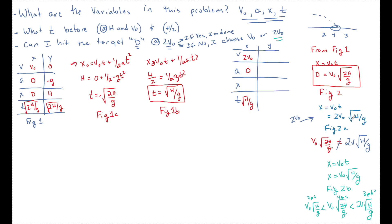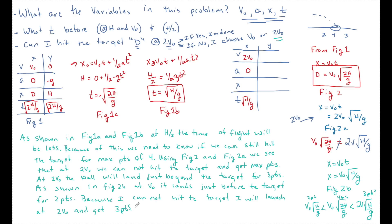Now the hardest part: putting all of this into words to get full points. As shown in Figures 1a and 1b, at h over 2 the time of flight will be less — that statement earned one point. Because of this, we need to know if we can still hit the target for four points. Using Figures 2 and 2a, at two v naught we cannot hit the target and get max points — that earned another point. Stating the fact that you could not hit the target was worth a point.